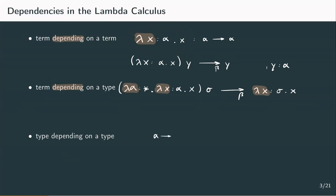Take a look at alpha to alpha. It would be natural to define a function which takes any type alpha as input and returns alpha to alpha. With type abstraction, this would be lambda type alpha dot alpha to alpha. So we have a type that changes depending on the input type. It could reduce to sigma to sigma when applied to sigma, or gamma to gamma, or even more complex terms. One can imagine this as fixing the structure of a type. Another feature is that we're going to generate types ourselves instead of getting them from the system.